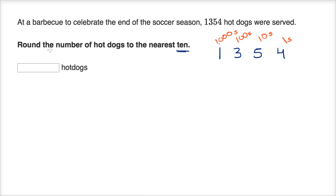They want to round to the nearest 10. We have five tens, but in order to round, we have to look to the next smallest place — the ones. We have four ones here, and because this number is less than five, we round down.